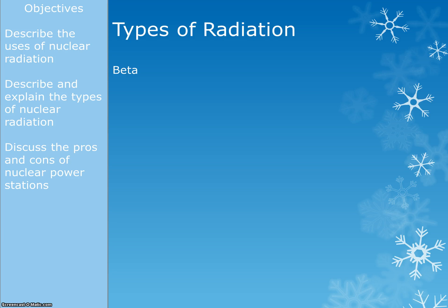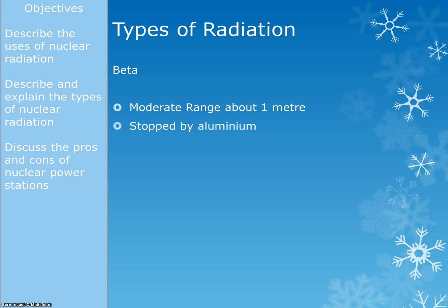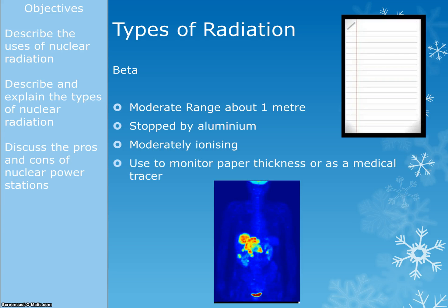The next type of radiation is beta radiation. This has got a moderate range — the word for beta is moderate — so it's got a range of about one metre. It's stopped by aluminium, so it can go through paper but a thin layer of aluminium should be enough to stop it. And it's moderately ionising, so it's moderately dangerous. One use is to monitor the thickness of paper at the paper mill.